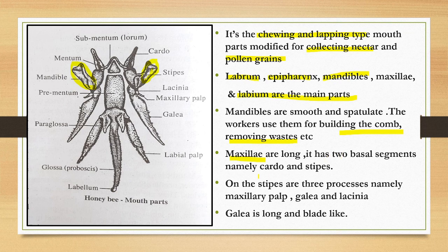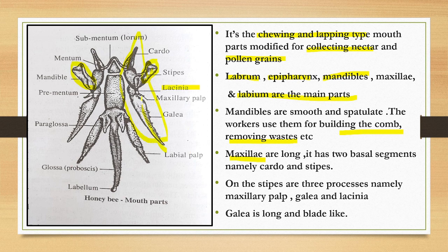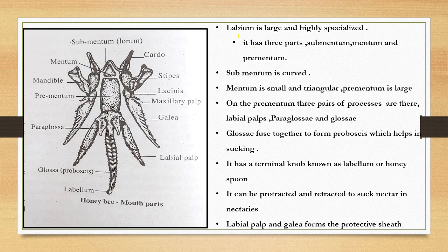The maxilla has two basal segments called cardo and stipes. This is called the cardo and this is the stipes. One lobe is called the lacinia. There is also a galea and a maxillary palp. The maxillary palp is short. The galea is long and blade-like.